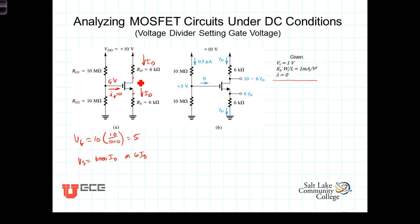We also can write an expression for V_D. V_D similarly is going to be the 10 volts minus 6 times I_D.